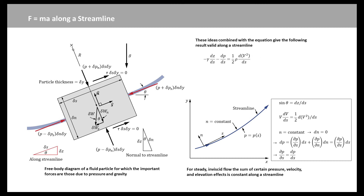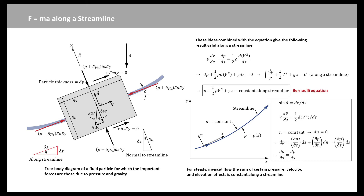This equation can be rearranged and integrated. From this figure, we know these ideas. These ideas combined with this equation give the following result valid along a streamline. For constant acceleration of gravity, it can be integrated to give this equation, where C is the constant of integration to be determined by the conditions at some point on the streamline. With the additional assumption that the density remains constant, this assumes the following simple representation for steady, inviscid, incompressible flow as the Bernoulli equation.